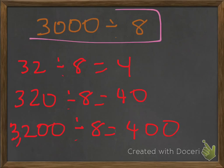So back to our original problem: 3,000 divided by 8. We don't need to know the exact answer. So instead of multiplying, we can divide.